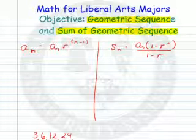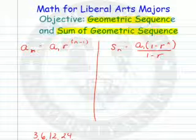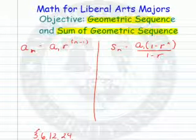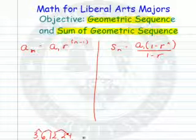So like an arithmetic sequence, this one has a number of terms, a sub n, and instead of a common difference, it has a common ratio. What would you multiply 3 by to get 6? 2. 6 by to get 12? 2, and so forth. So that r, the common ratio, in this case is 2.